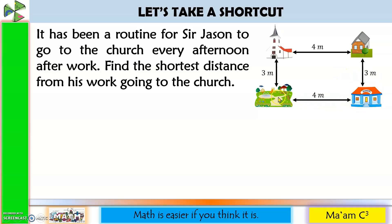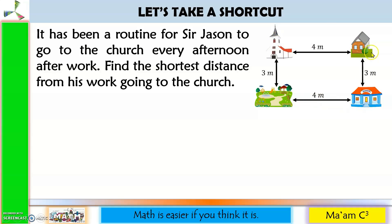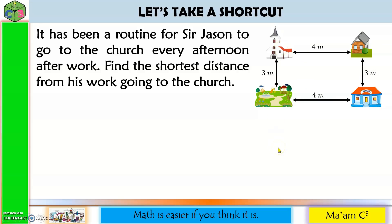Will he pass the park first then go to the church? Or go home first before going to the church? Either way, he will walk 7 meters — 3 plus 4 is 7, or 4 plus 3 is 7. Is there another way to go to the church in a shorter distance?